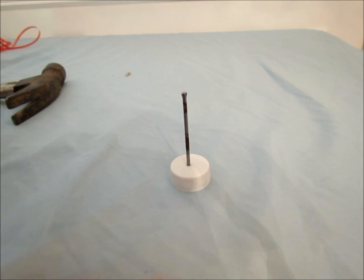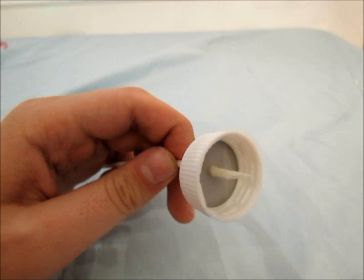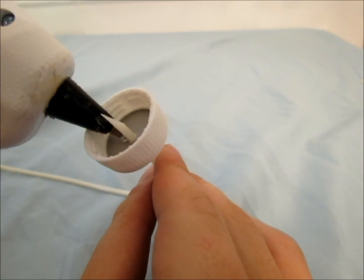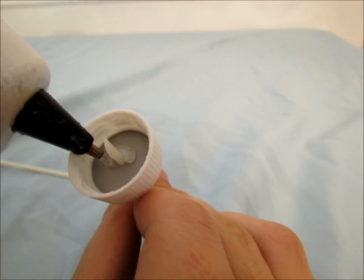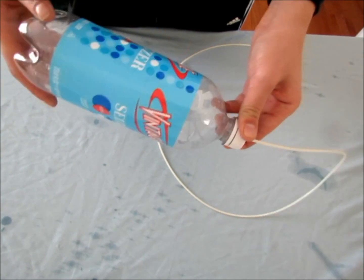First, puncture the bottle cap with a nail. Then insert the tubing through the hole in the bottle cap. Seal the cap by surrounding the tubing with hot glue. Screw the cap back on to complete the squeeze bulb.